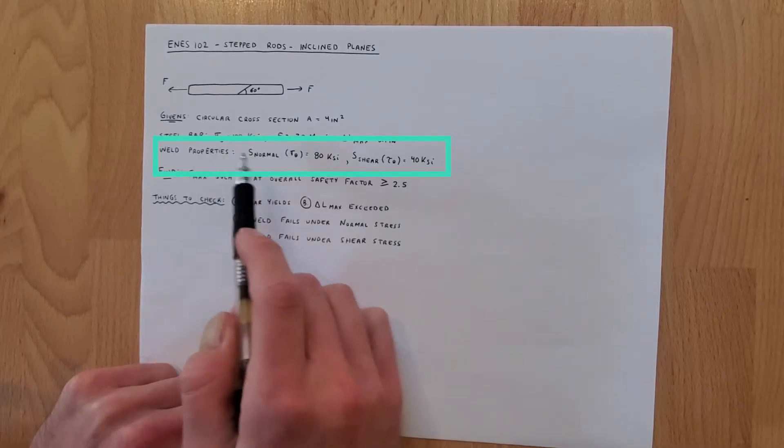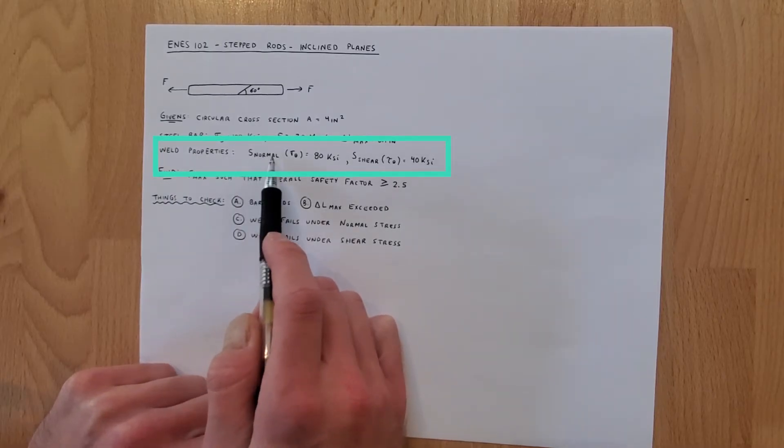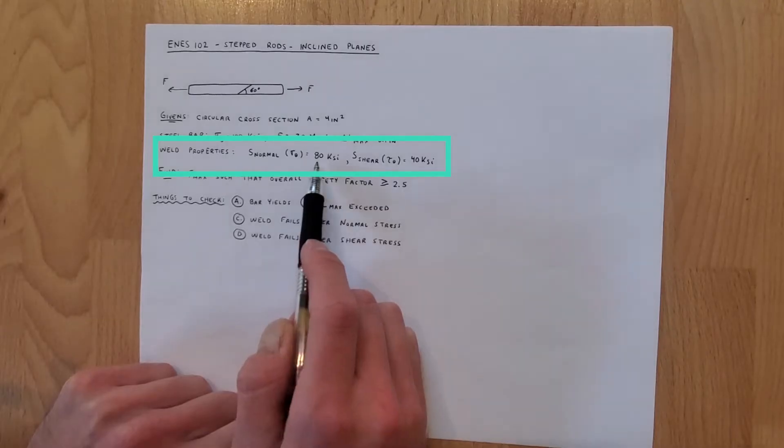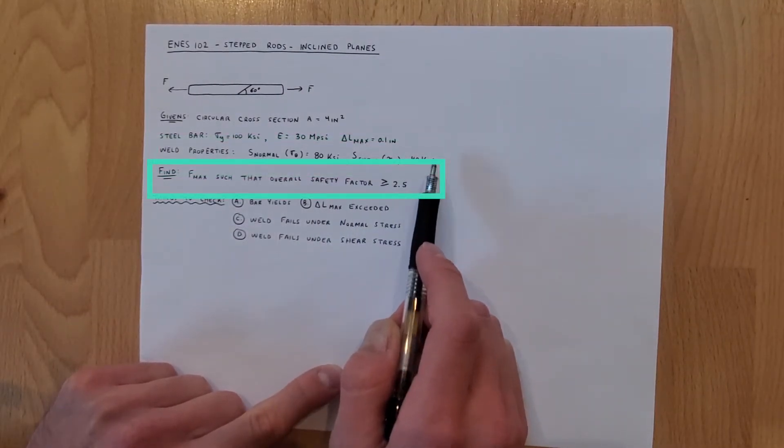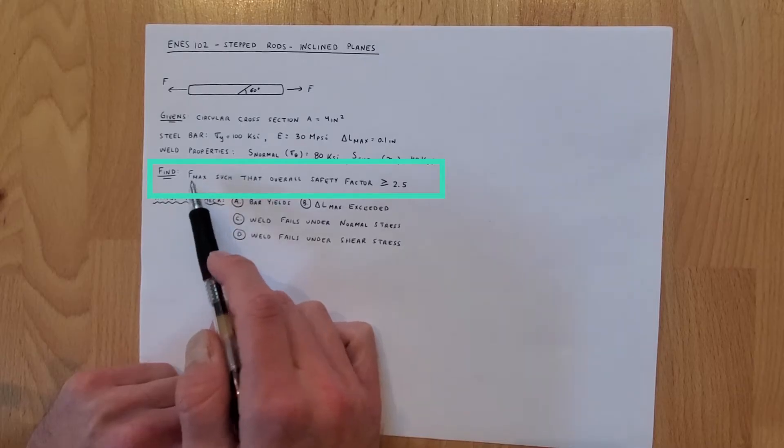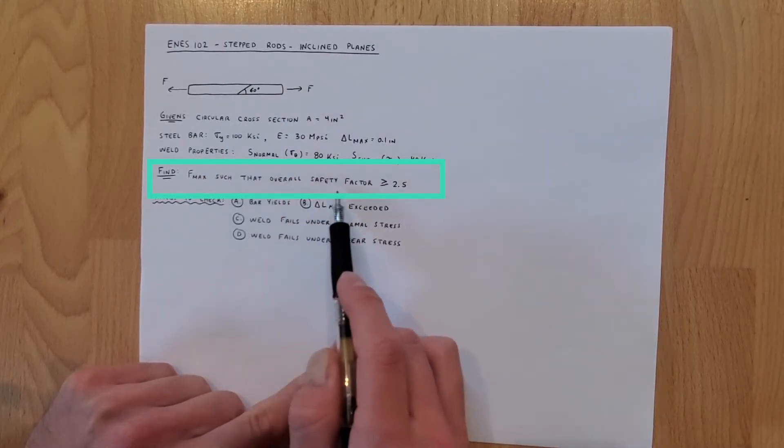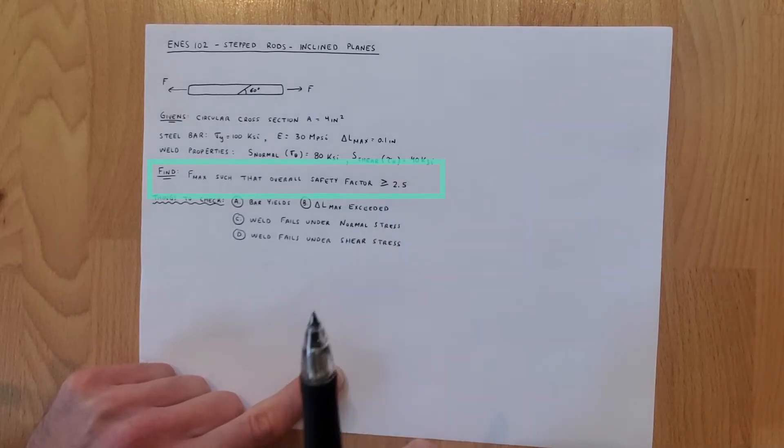The properties of our weld, we're told the maximum normal stress there or sigma theta is 80 ksi and the shear strength of our weld is 40 ksi. We're told to find f maximum at either end such that the overall safety factor is greater than or equal to 2.5.